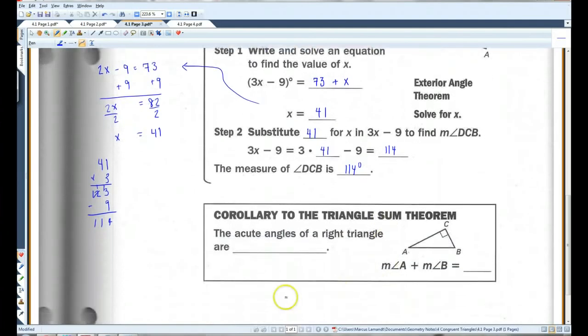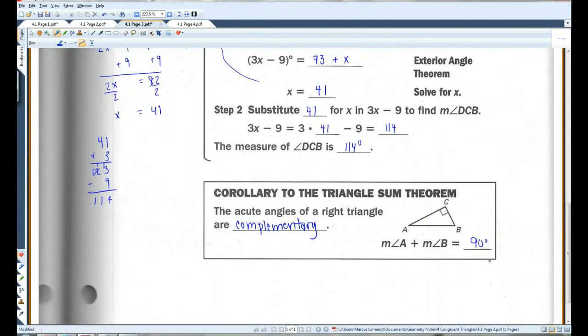Okay. A corollary to the triangle sum theorem. The acute angles of a right triangle are complementary. Which makes sense because if all of these angles add up to 180 and this angle is 90, obviously, these two have to add up to 90 to make all the angles add up to 180. Okay. So, as you can kind of tell that this is an extension of the triangle sum theorem. So, 90 degrees.